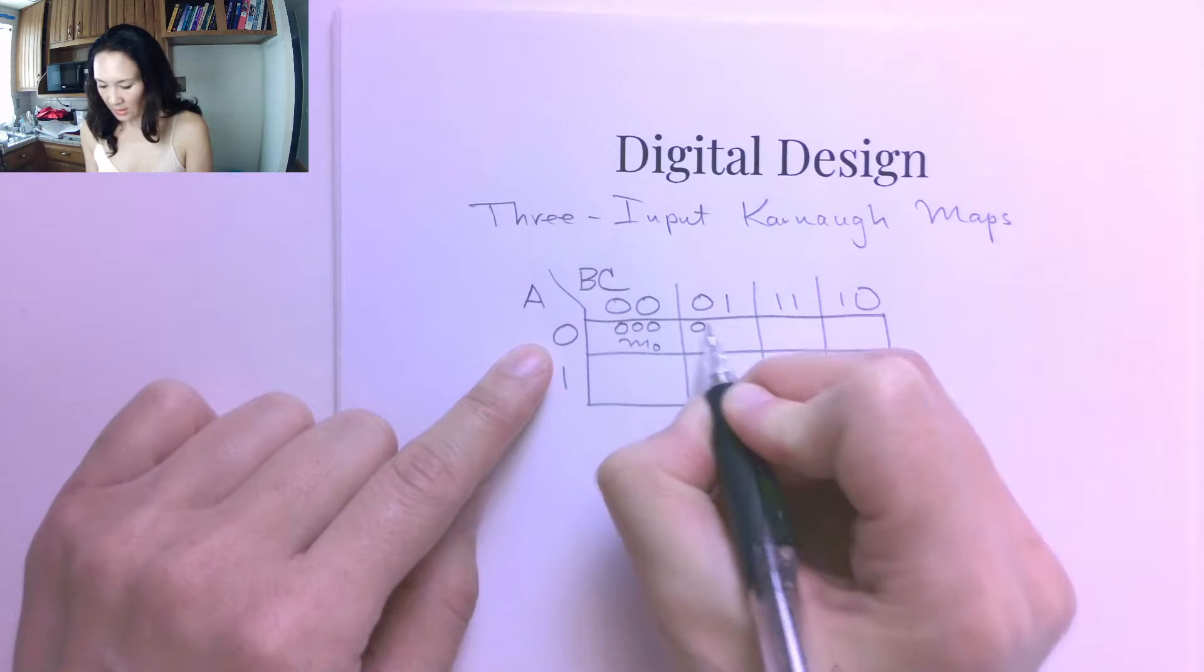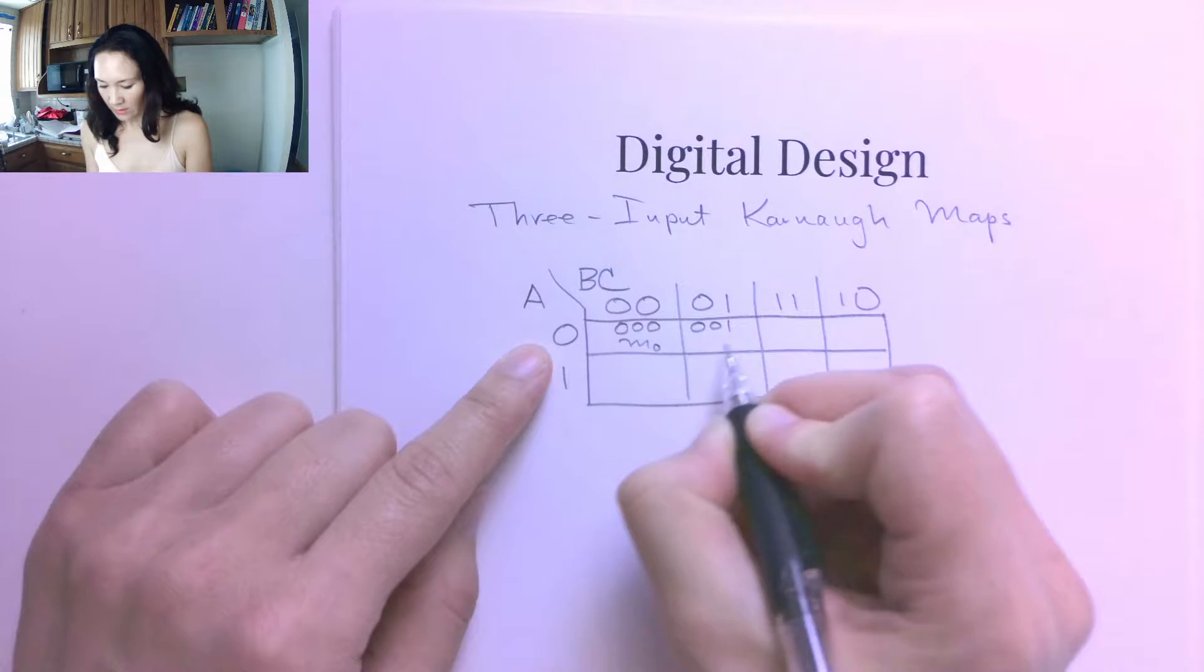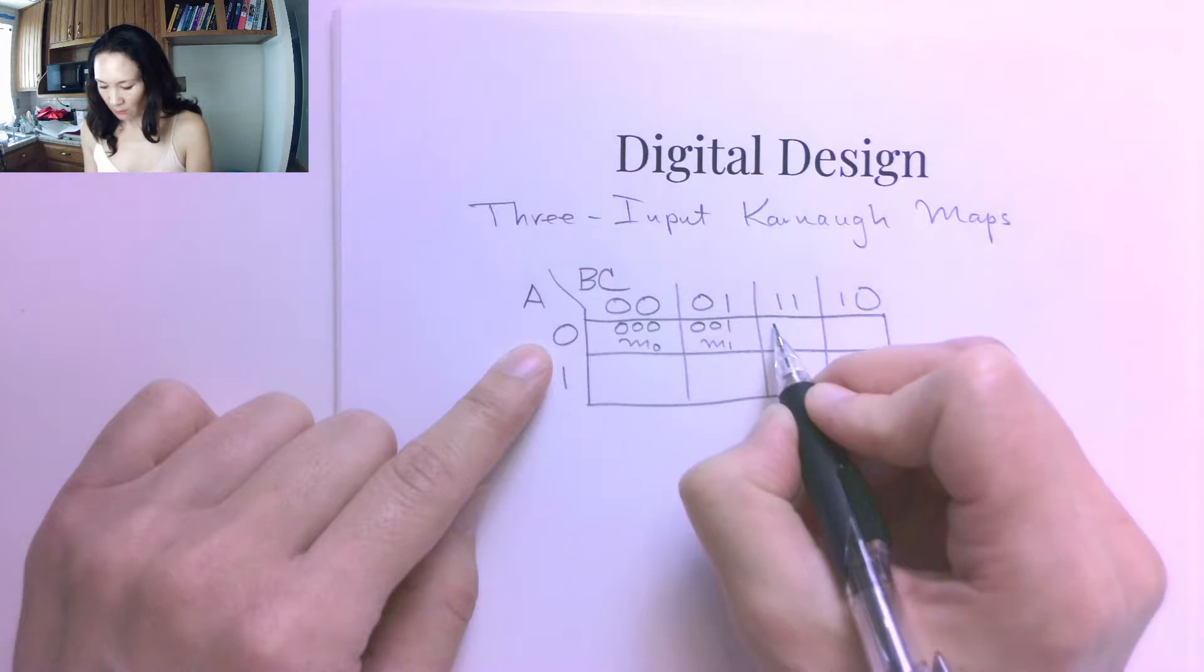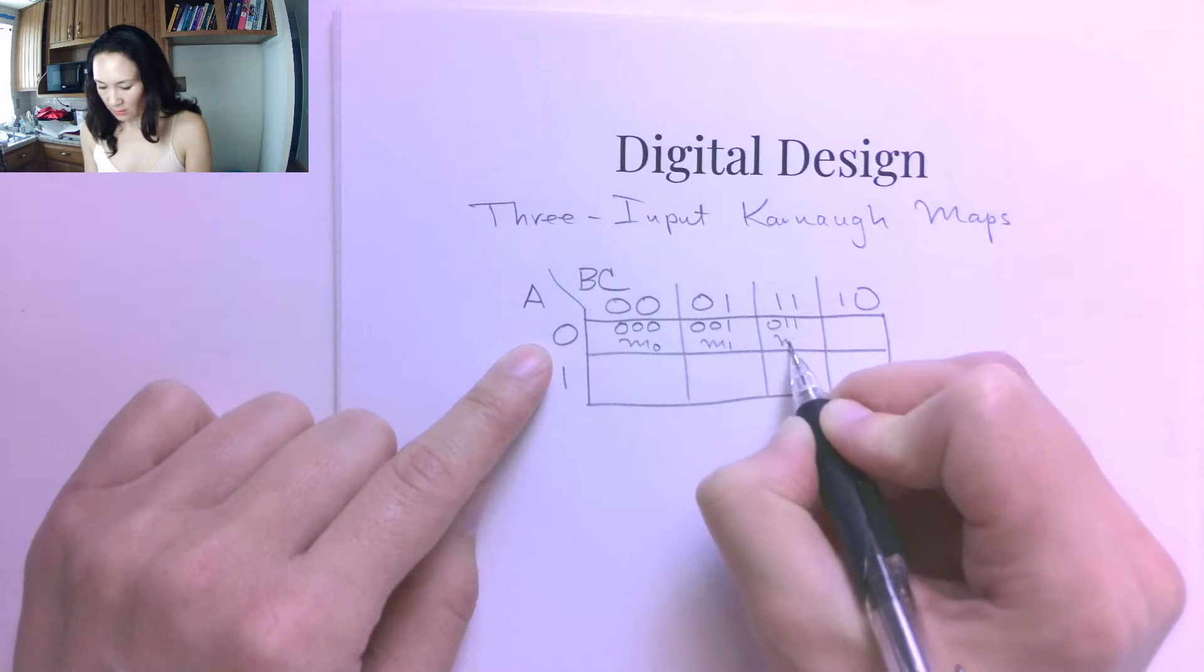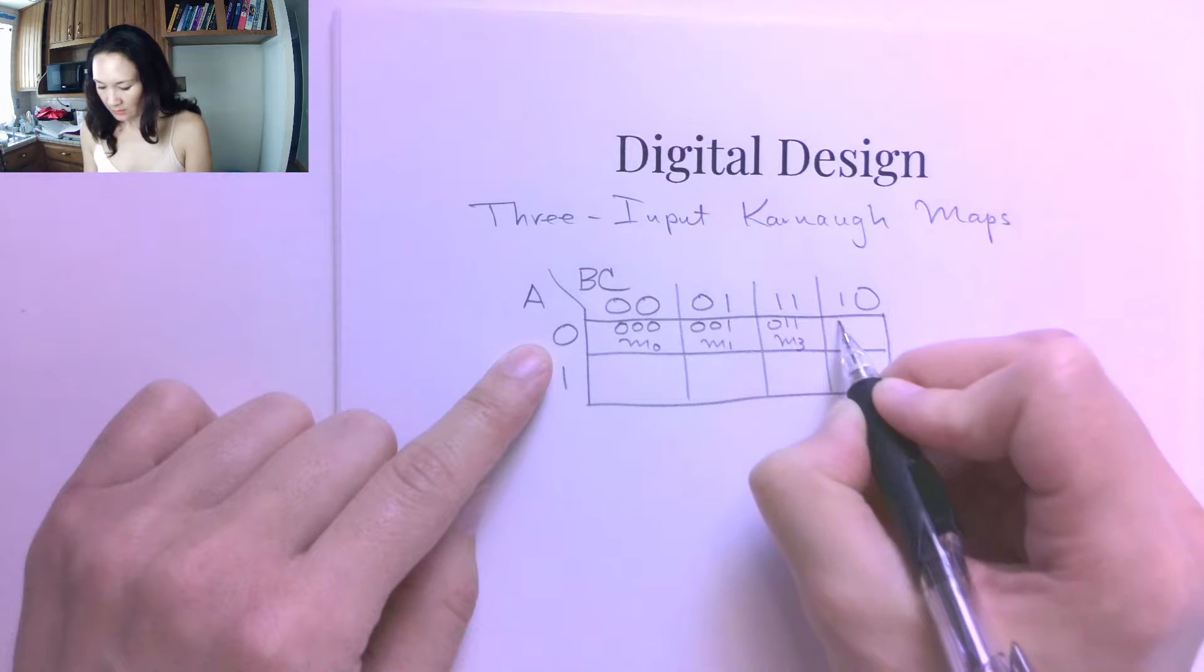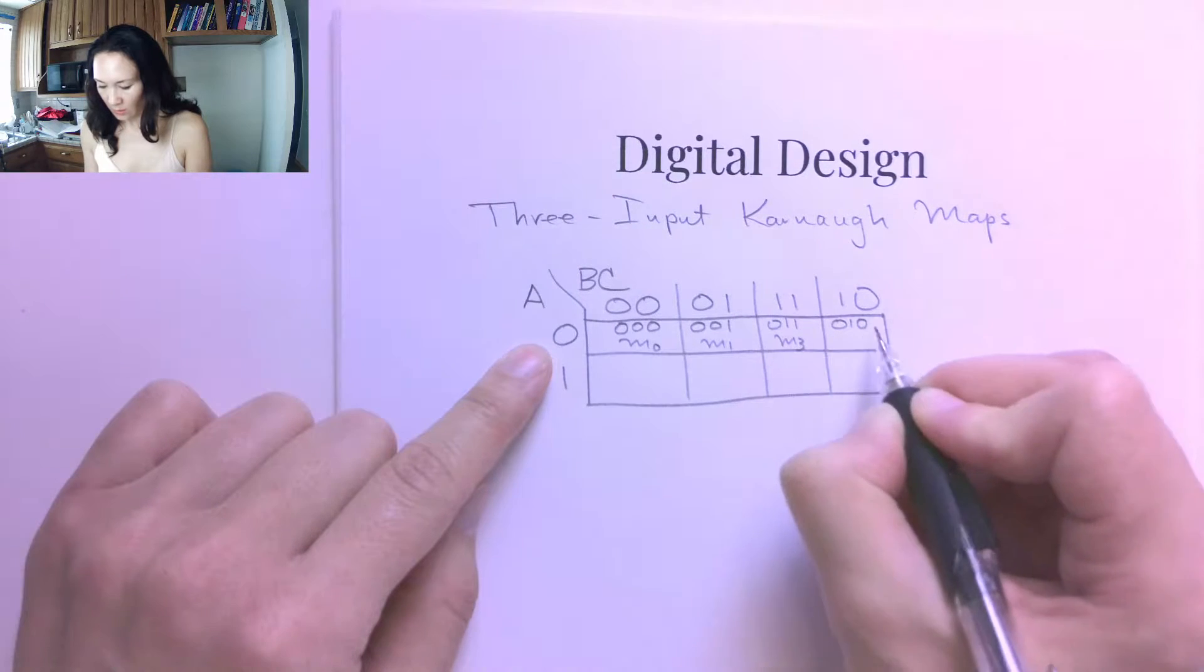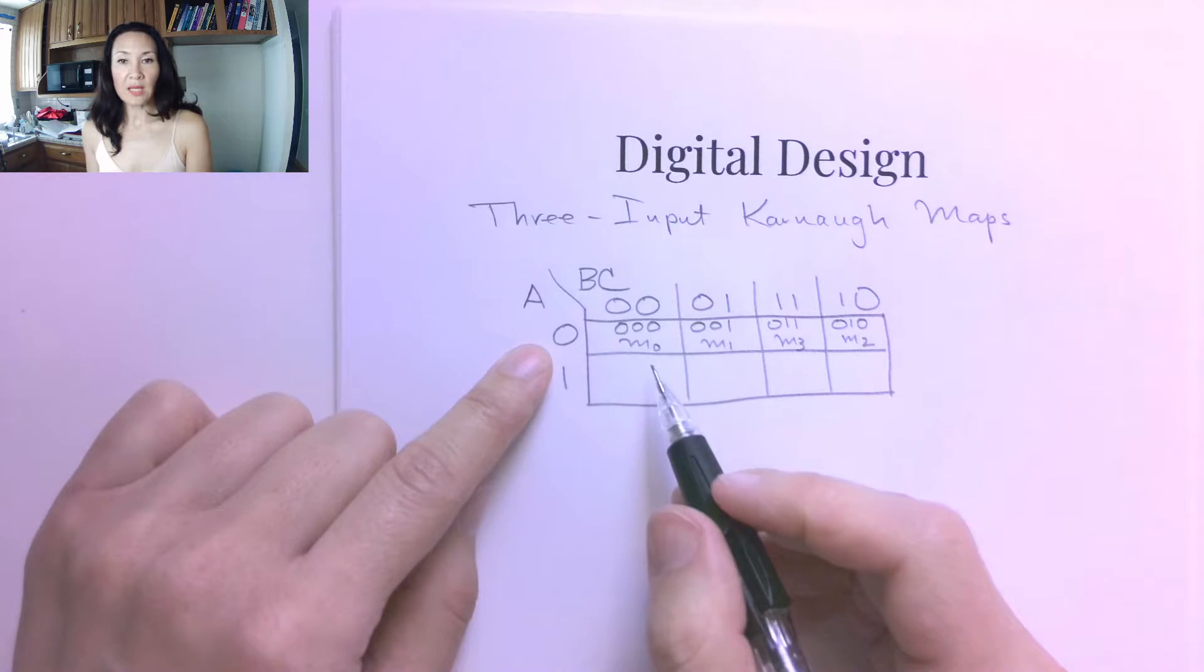This is when the inputs are 0, 0, 1 or min term 1. This is where the inputs are 0, 1, 1. And this is actually min term 3. And this is 0, 1, 0, which is min term 2. So you have to be careful.